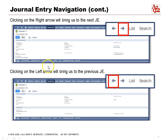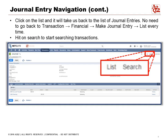So here, if you click on the right arrow, it will bring us to the next journal entry, and if you click on the left arrow, it will bring us to the previous journal entry. If you click on list, it will take us back to the list of journal entries.